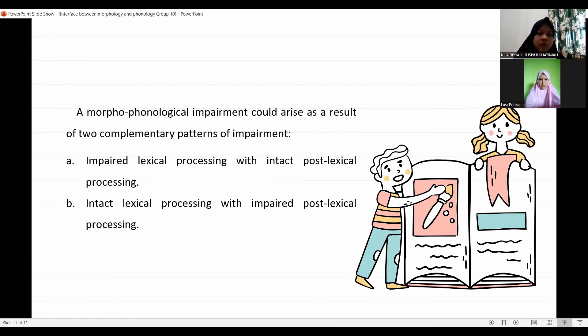A morphophonological impairment could arise as a result of two complementary patterns of impairment: A, impaired lexical processing with intact post-lexical processing; B, intact lexical processing with impaired post-lexical processing.